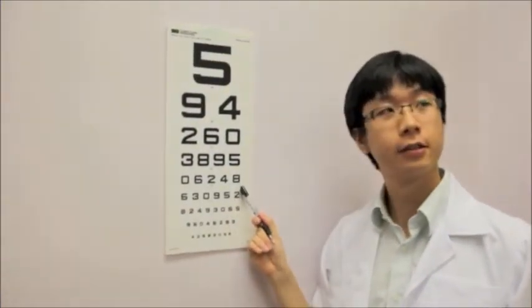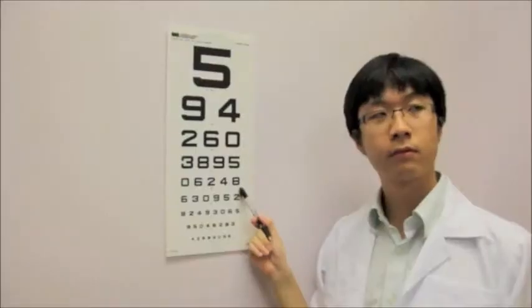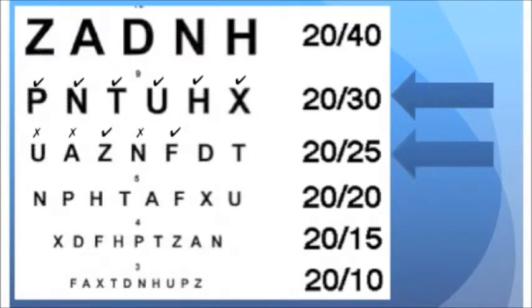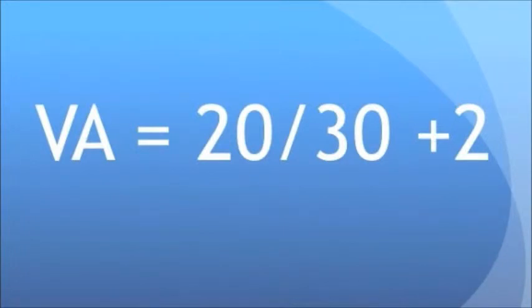Have the patient read the smallest row of letters that can be easily read. Encourage the patient to read the next smallest row, and take note of the row in which the patient can completely read and the corresponding visual acuity measurement. If the patient can only partially read a line, the number of additional letters that can be read can be noted. For example, if the patient can read all of the letters on the 20 over 30 line but only 2 on the 20 over 25 line, the visual acuity can be recorded as 20 over 30 plus 2.